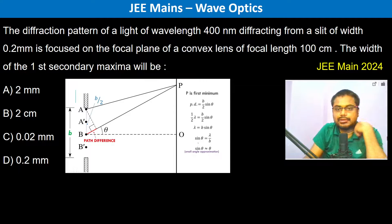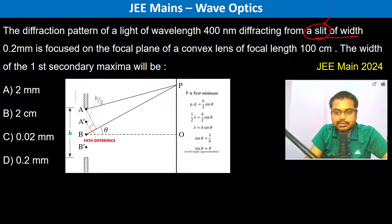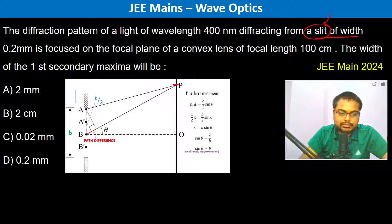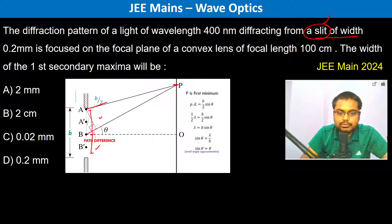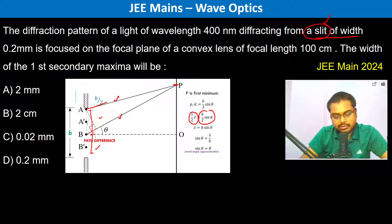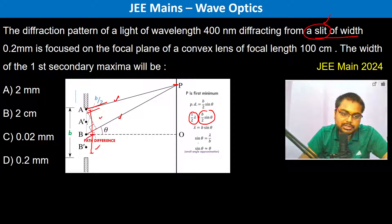We are analyzing the diffraction pattern of light with wavelength 400 nanometers deflecting from a single slit. In a single slit diffraction pattern, we divide the source into two points. If B/2 · sinθ equals λ/2, then this wave is going to destructively interfere with the other wave, and likewise simultaneously all the way across.